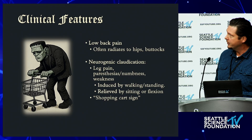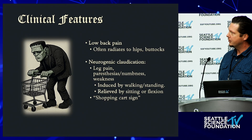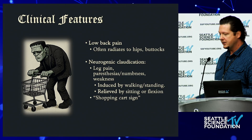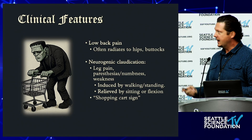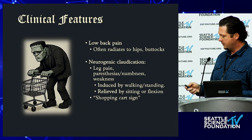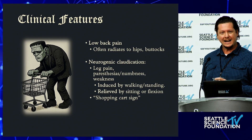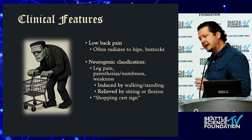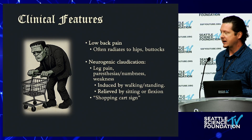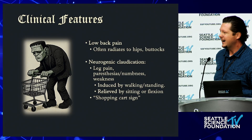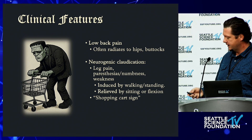Clinical features: the shopping cart sign is the hallmark of neurogenic claudication. Patients have to hunch over — they need a shopping cart, as Frankenstein demonstrates here. Generalized back pain is common; it's not often the sharp mechanical axial pain of facet joint involvement or myofascial pain. It's more of a vague pain radiating out to the hips and buttocks area.